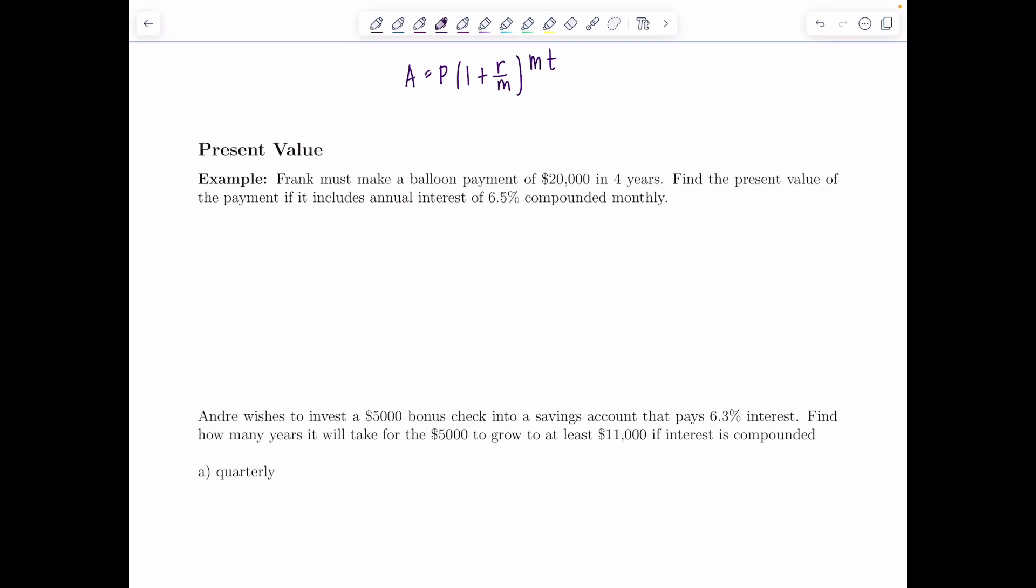So here's an example. Frank must make a balloon payment of $20,000 in four years. Find the present value of the payment if it includes annual interest of 6.5 percent compounded monthly. So I'm going to make the little list off to the side of all the variables A, P, R, M, and T.